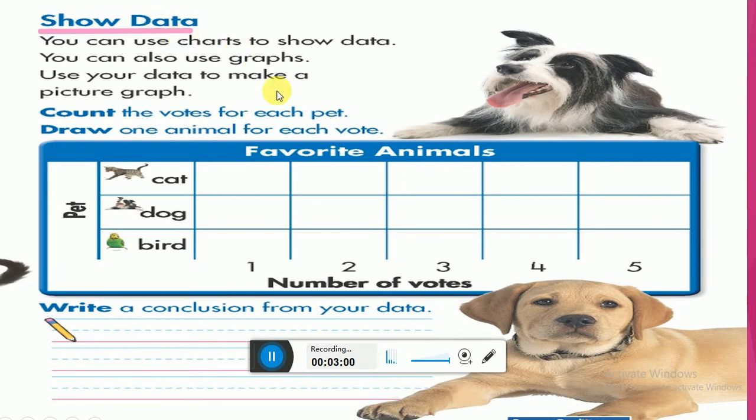How can scientists show data? By using charts. Sometimes they use charts, some other times they can use graphs.